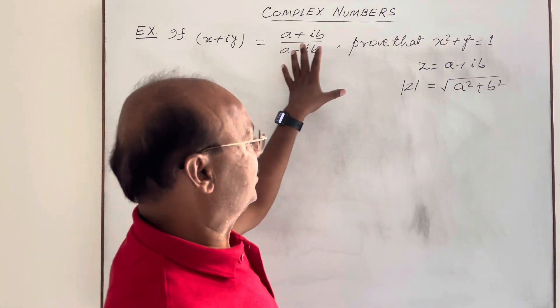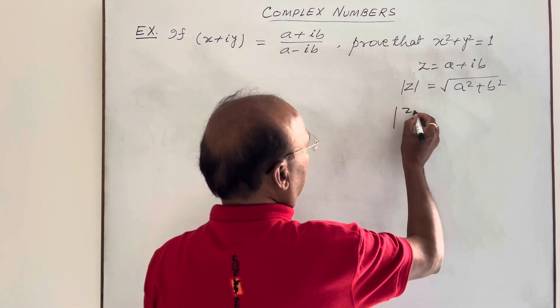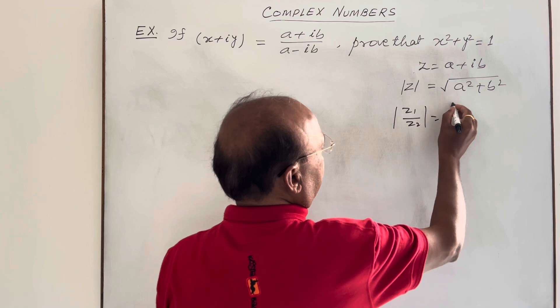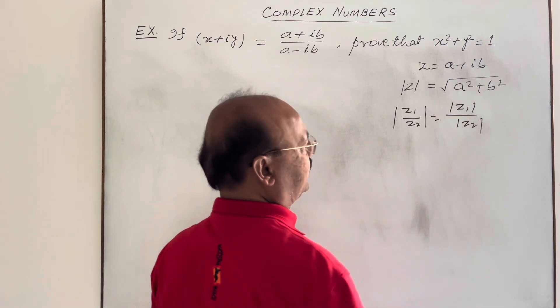This one property we will be using here, and another property we will use is that modulus of z1 by z2 is equal to mod of z1 upon mod of z2.